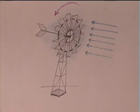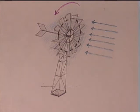The second type was the American farm windmill. It used from 10 to 20 small drag blades. It was used to primarily pump water.